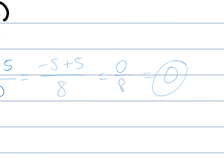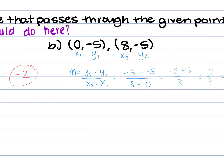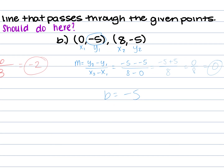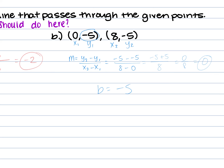Zero in the denominator — undefined. The D in denominator, undefined. But if zero is in the numerator, the slope is just zero. So m equals zero. What's my b? When x is zero, y is negative five — so b equals negative five. What kind of line is this? Horizontal — because the slope is zero. So y equals negative five.